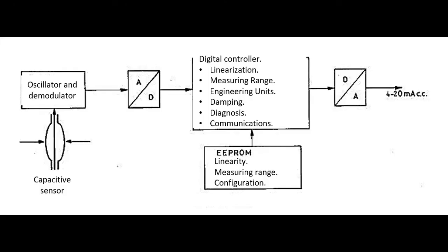A circuit with an oscillator and a demodulator transforms this variation of capacitance into an analog signal, which in turn is converted into digital and goes through an intelligent microcontroller that converts it into an analog output signal of 4 to 20 mA direct current.